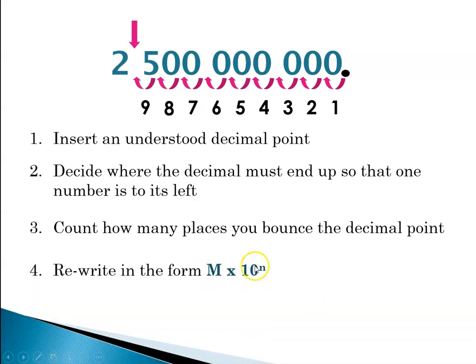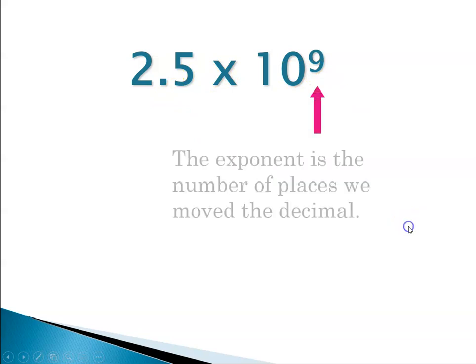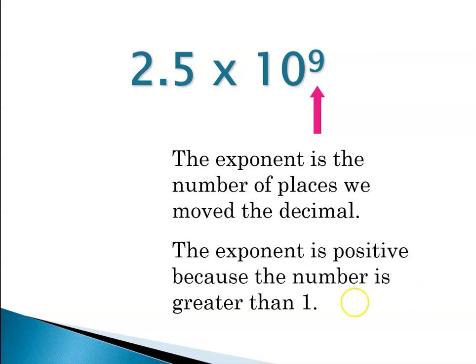So now we can rewrite the number in the form m times 10 to the n. So 2.5 times 10 to the ninth. And you'll notice that the exponent is the number of places that we bounced the decimal or moved the decimal. Also notice that the exponent is a positive number because this number was greater than one. In fact, it's 2.5 billion.